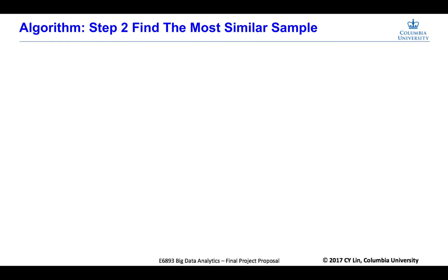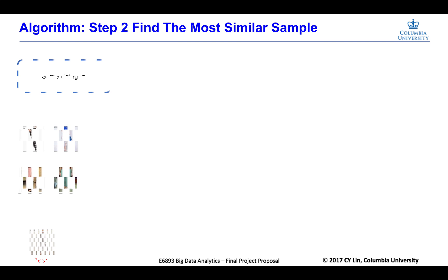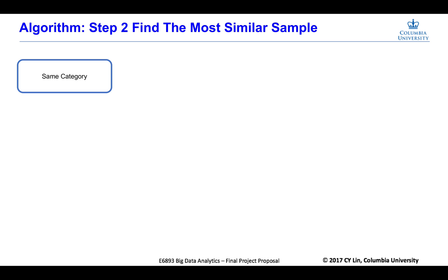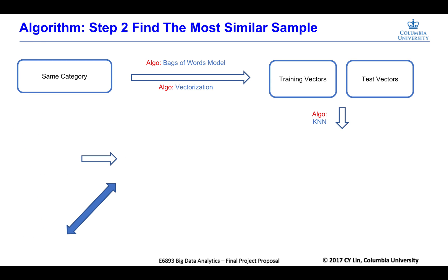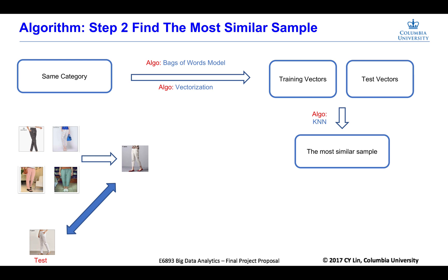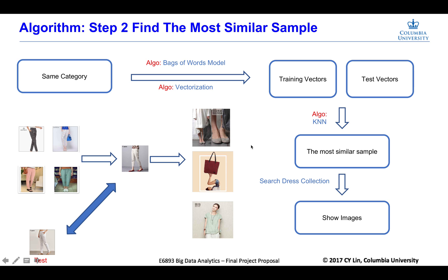After predicting the category, we came to the second step: find the most similar sample. In this step, we created a bag of words according to the keywords of the training and test samples. Then we embedded those training and test samples into vectors. Each vector had the same dimension, which was equal to the number of words in the bag. By vectorizing, it enabled us to calculate the distance between them. We assumed that the training sample most similar to our test sample had the least distance between the vectors. To calculate this similarity, we applied the k-nearest-neighbor algorithm and simply set k equals to 1. We can see that the prediction is very much alike to our test sample. At last, we pulled the data collocation to show the images of the matchings.